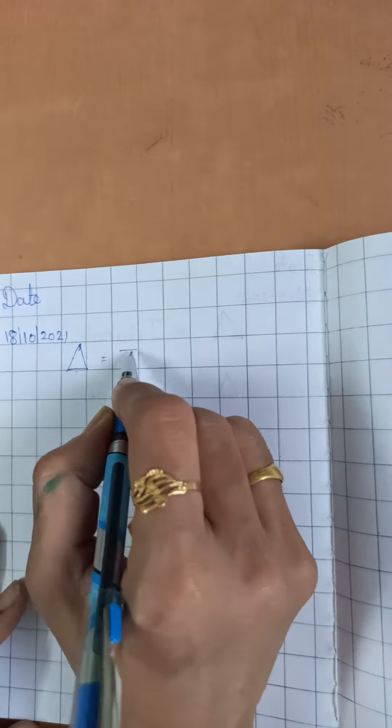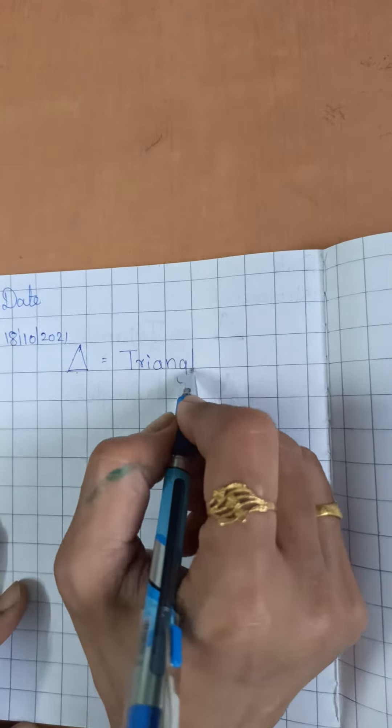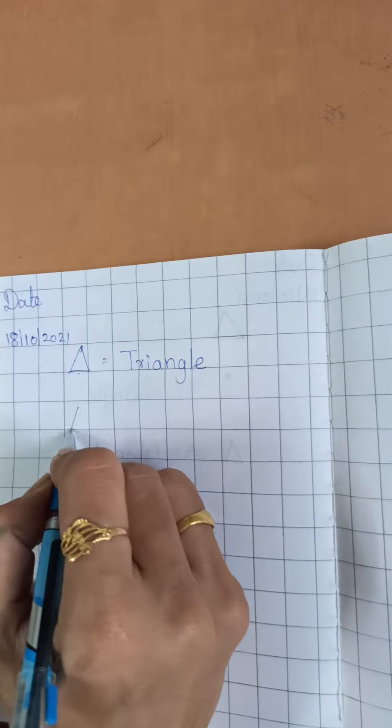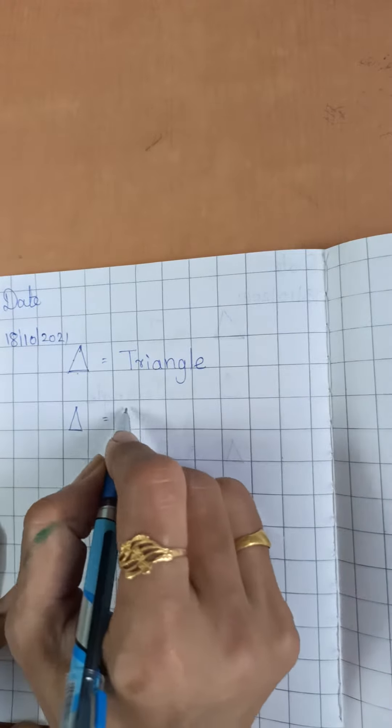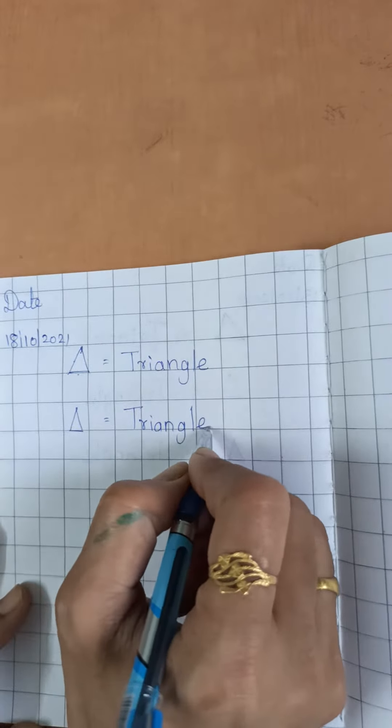And what is the spelling of triangle? See, T-R-I-A-N-G-L-E, triangle. Triangle is equal to T-R-I-A-N-G-L-E, triangle.